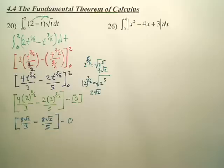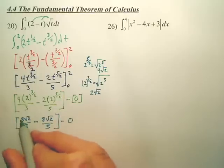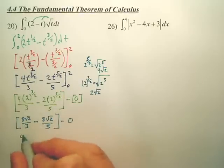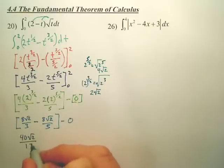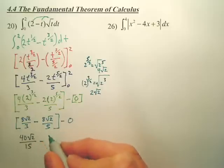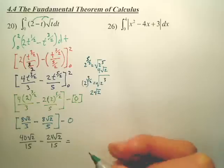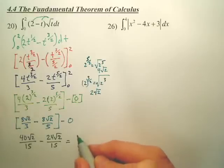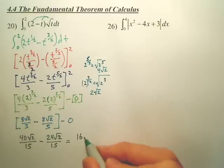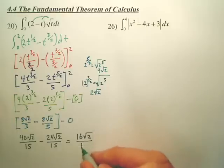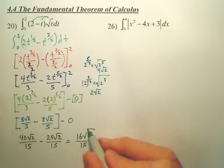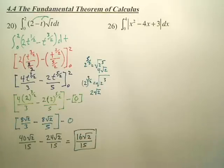And on this particular problem, you do need a common denominator because you're actually getting a number. So you're going to have to multiply this one by 5 over 5, 40 square root 2 over 15. This one by 3 over 3, which becomes 24 square root 2 over 15. So your answer ends up being 16 square root 2 over 15. That would be the area under the curve.